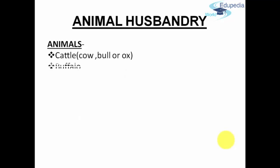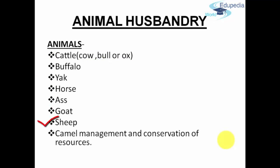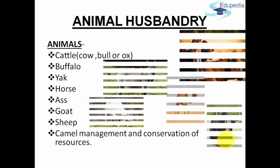The animals included under animal husbandry are cattle, which include the cow, the bull or ox, the buffalo, the yaks, horses, ass, goats, sheep and camel — these represent the range of animals included in animal husbandry.